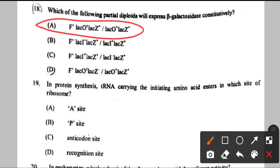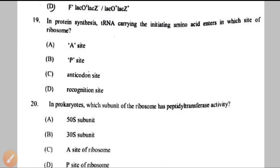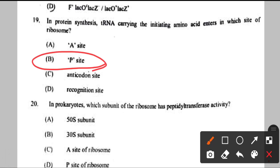Question number 19: initiating tRNA carrying the first amino acid enters which site of the ribosome? There are three sites: A, P, and E. The first amino acid methionine-carrying tRNA enters the P site — the middle site — and subsequent codons enter through the A site. So option B, the P site, is the correct answer.